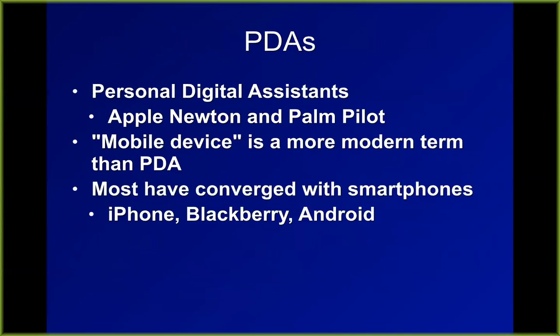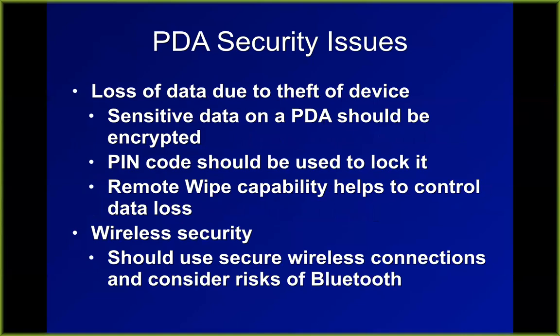Most people that have a company phone have to have it controlled by the server with a mobile device management solution, so they can limit what apps you put on it, and wipe it when it gets stolen. Security issues include: you should have a PIN, it should have a remote wipe capability, you should use secure wireless connections, and be careful using Bluetooth.